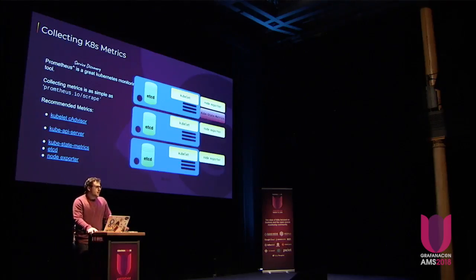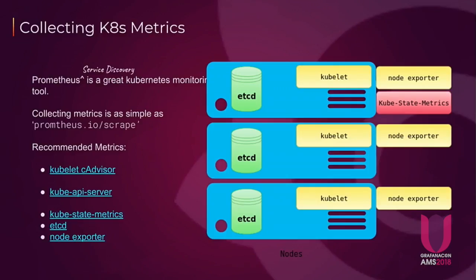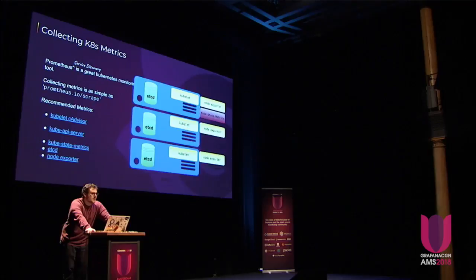In terms of monitoring Kubernetes, I want to say that Prometheus is, I would say, the de-facto standard. Not necessarily because it's the best time series database, but the service discovery is really what's special in Kubernetes. By that I mean the actual Kubernetes application — kubelet, the kube API server — because those applications are instrumented to report Prometheus metrics.